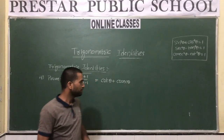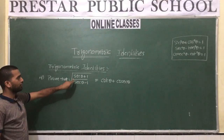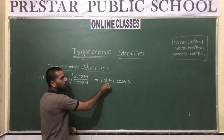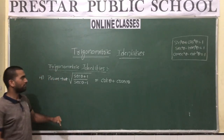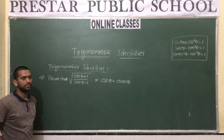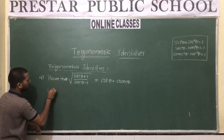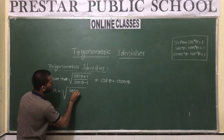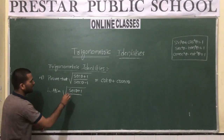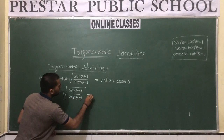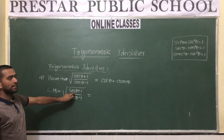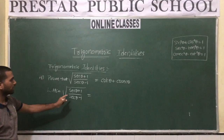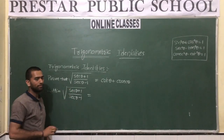Let us discuss one more problem. Prove that √((secθ + 1)/(secθ - 1)) = cosθ + cosecθ. We need to prove LHS equals RHS. Let us consider LHS: √((secθ + 1)/(secθ - 1)). I will explain two methods to solve this.